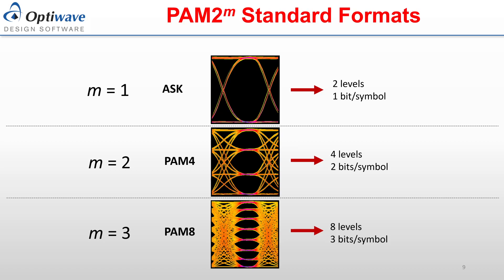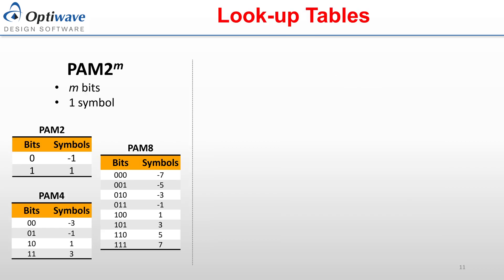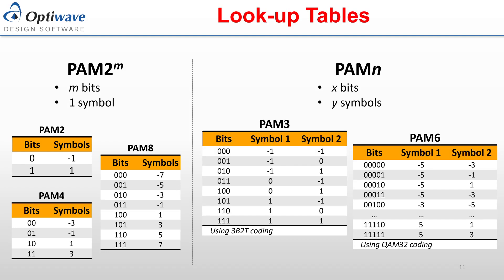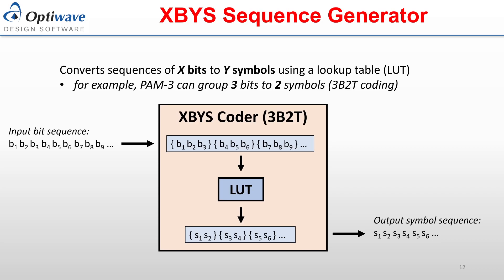Standard PAM formats involve encoding bits into symbols, where the number of unique symbols used is a power of 2, such as in PAM2, PAM4, and PAM8. For these systems, a lookup table is used to map m bits to one symbol. In PAM-n formats, the number of symbols used is not restricted to a power of 2 and can be any integer. A lookup table can also be used, but maps multiple bits to multiple symbols. For example, a PAM3 system using 3B2T coding maps every 3 consecutive bits into 2 consecutive symbols. This technique has been implemented as a component in OptiSystem and is called the XBYS sequence generator, which maps every X bits into Y symbols using a user-supplied lookup table.